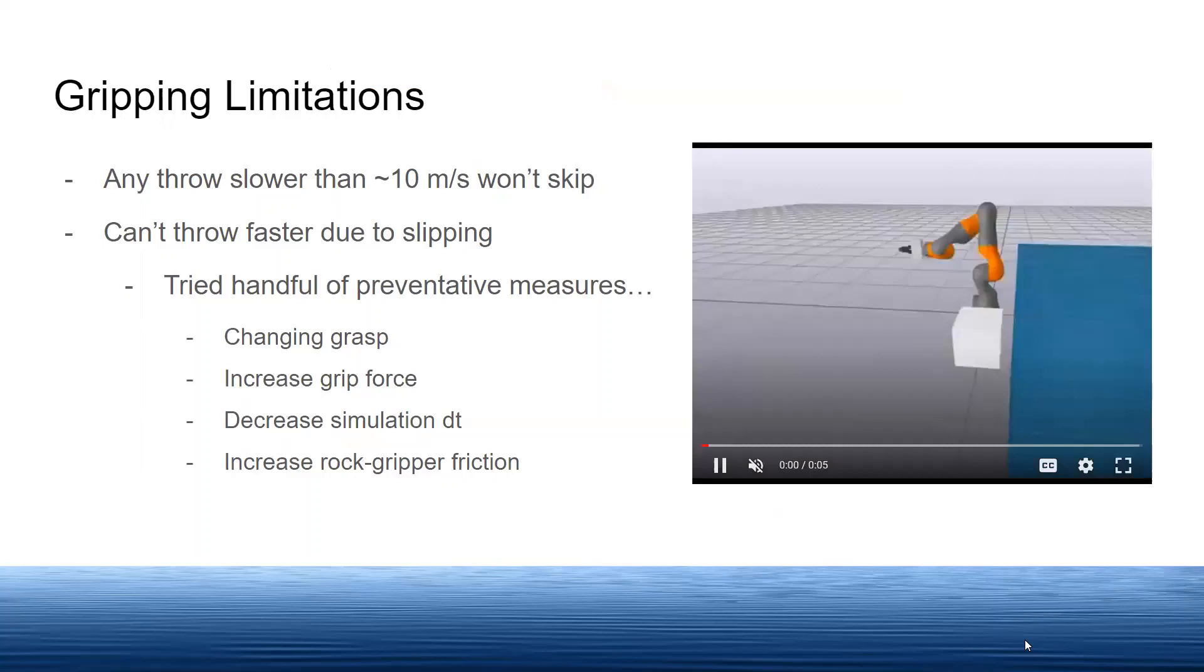We saw from our results earlier that rock velocities below 10 meters per second would not skip. But we kept running into problems where the rock would fly out of the gripper at desired velocities over 25 meters per second. We tried a few things to prevent this, but none of them helped.